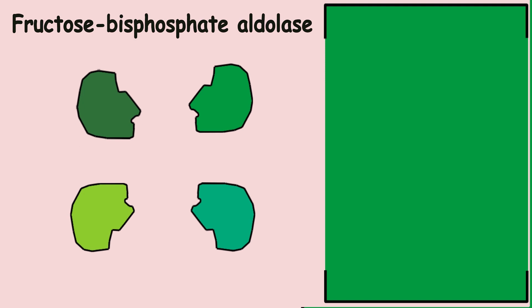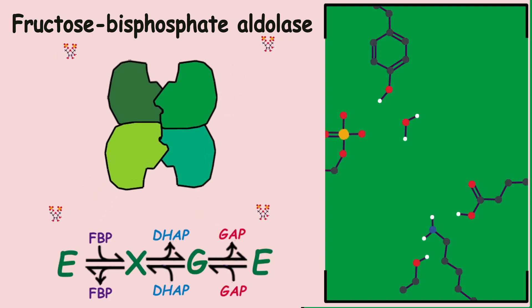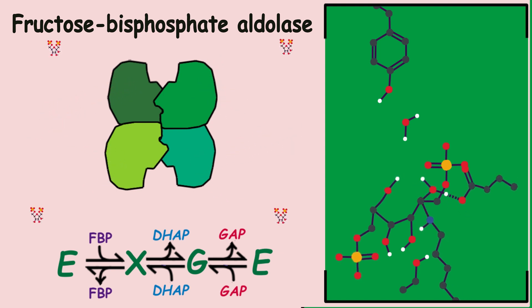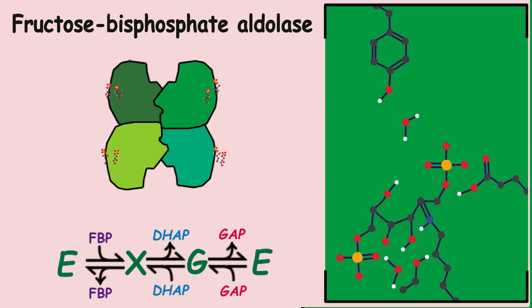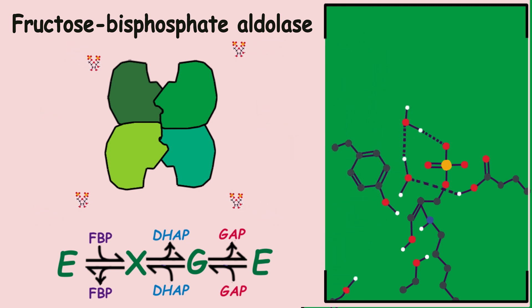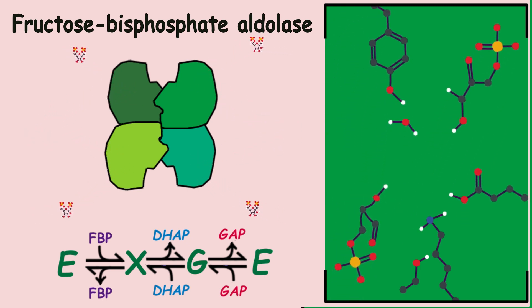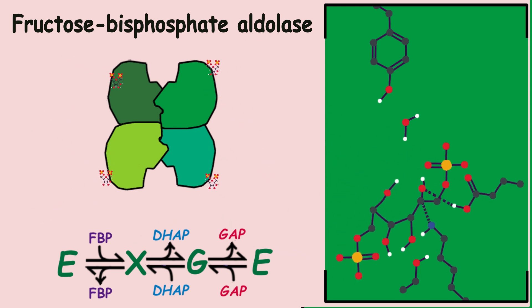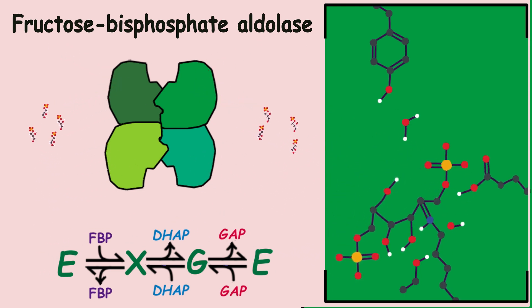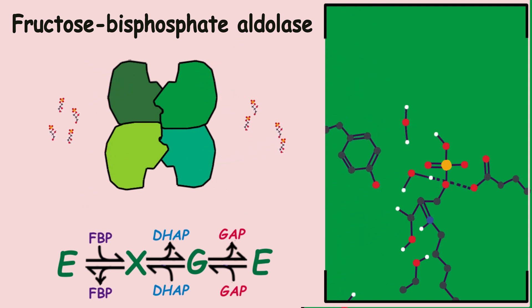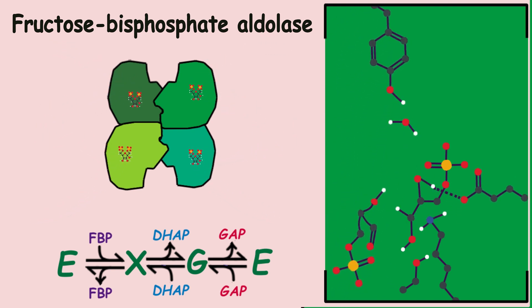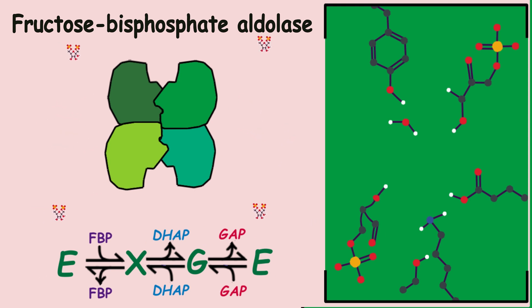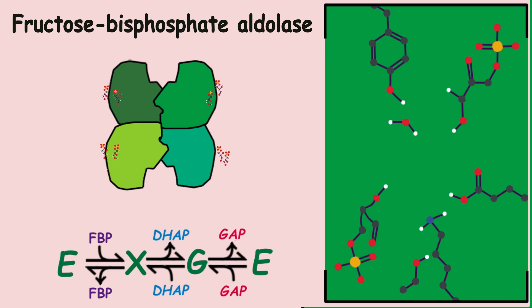The protein aldolase follows next; four of them form a tetramer. This protein begins the breakdown process by splitting fructose into two very similar three-carbon carbohydrates: dihydroxyacetone phosphate and glyceraldehyde-3-phosphate. The enzyme uses the amine group of the amino acid lysine to bind to fructose and initiate the reaction through an exchange of covalent bonds. The reaction is reversible; the enzyme can take the two products and reconnect them into fructose-1,6-bisphosphate.